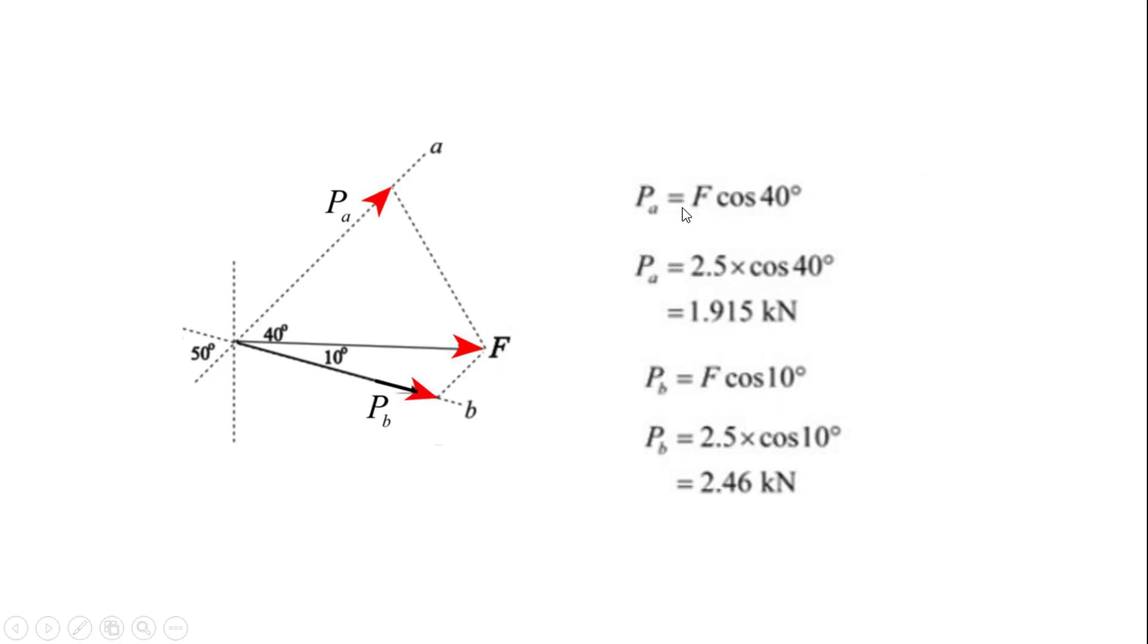Considering PB, this angle is 10 degrees, so PB equals F cos 10 degrees, which equals 2.5 cos 10, giving us 2.46 kN.